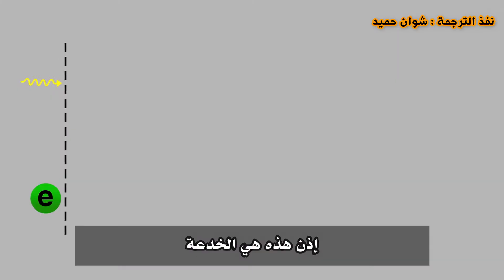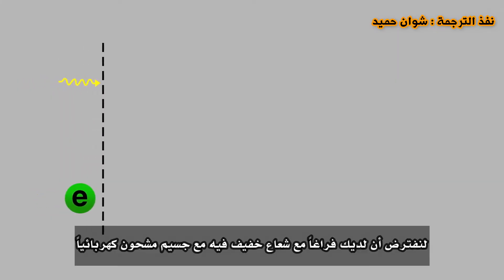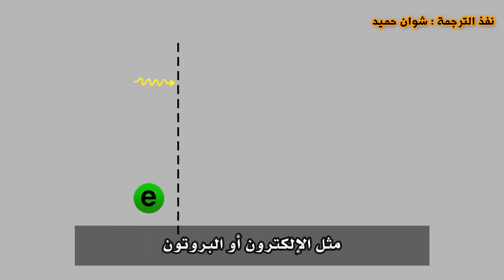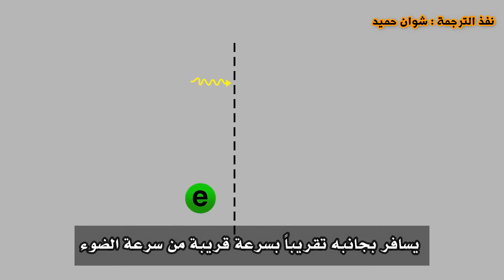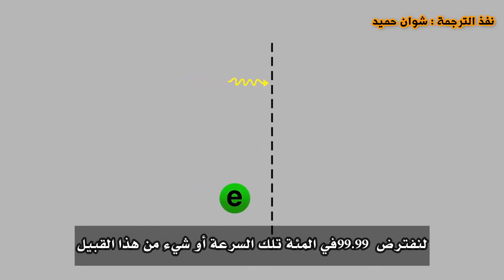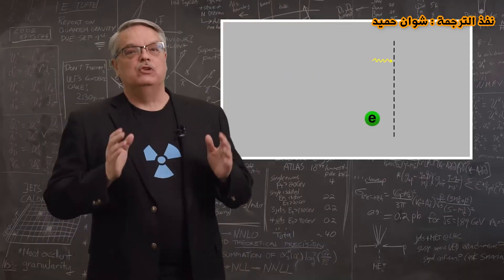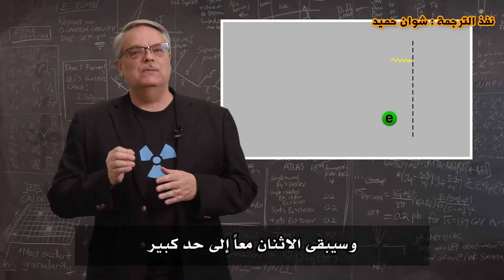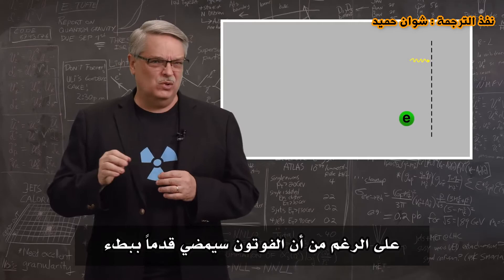So that's the trick. Suppose you had a vacuum with a light beam in it with an electrically charged particle like an electron or a proton traveling alongside it at very nearly the speed of light, say 99.99% that speed or something. The two of them would stay together pretty much, although the photon would slowly pull ahead.